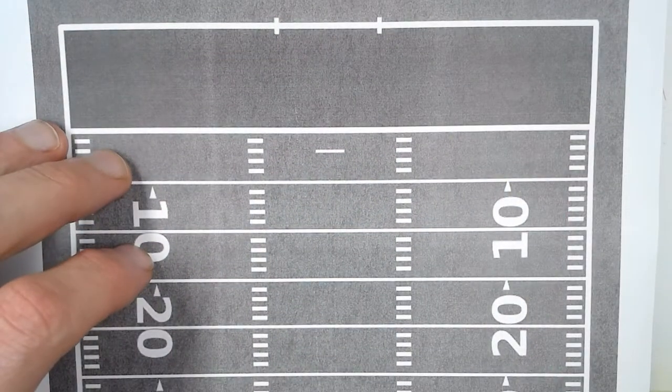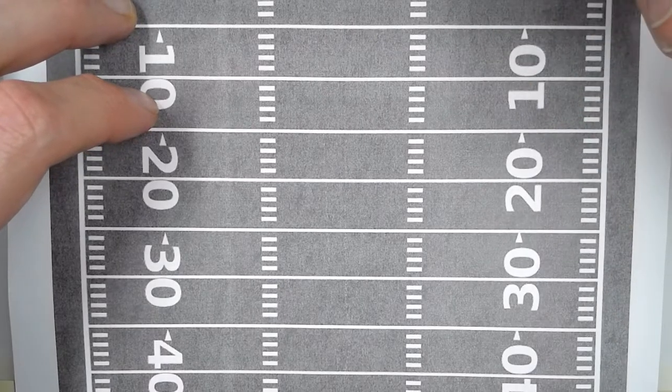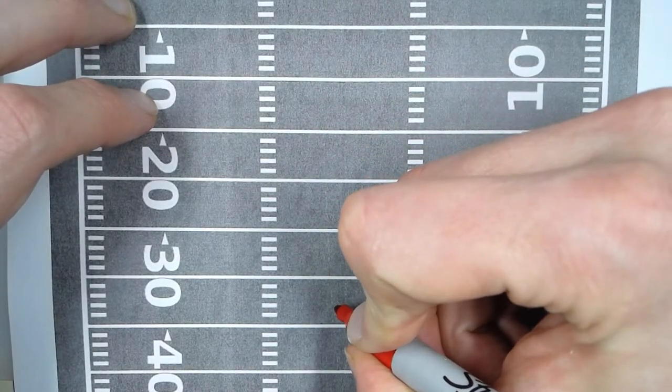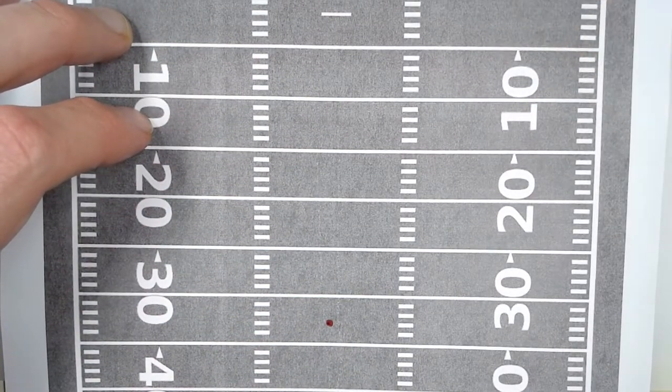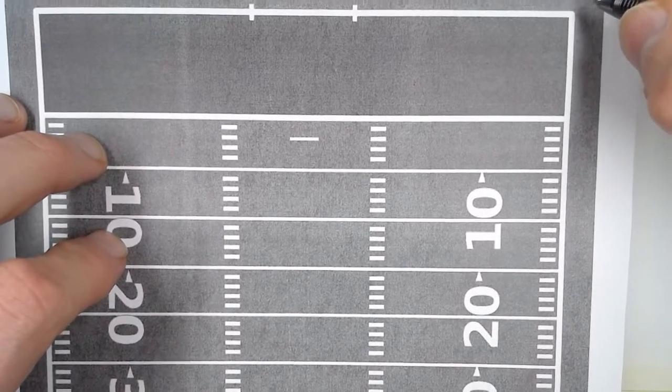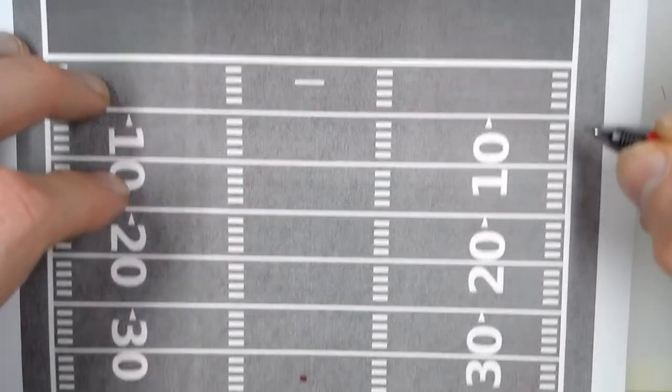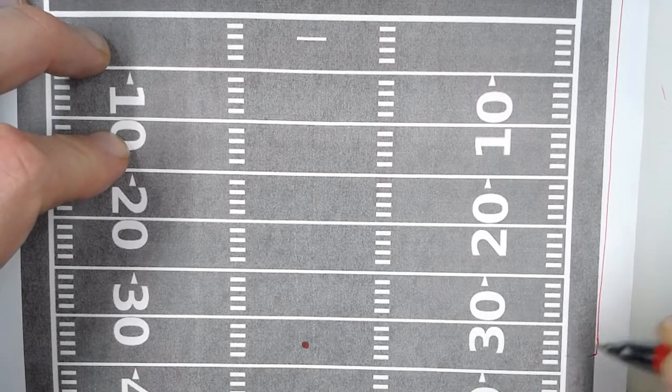And someone correctly pointed out, it was my mistake, a 43-yard field goal is actually going to be placed at the 33-yard line. Because I didn't take into account the fact that the end zone is actually 10 yards. So that means from the back of the end zone all the way out to where the ball is, that's the 43 yards. So thank you for that. I really appreciate that. I didn't know that, so I'm learning something too.